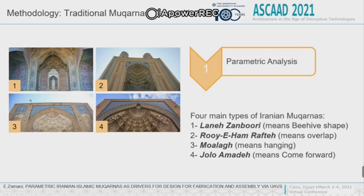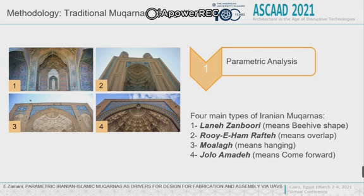Number three: Muallaq. Its shape is similar to stalactites and is formed by attaching various materials such as plaster tiles to the inside of a concave surface. This type of Mogharnas looks dangling and doesn't have high stability, although at first glance it is similar to Lani Zamburi. Number four: Jula Ahmada. Usually known as the simplest type, it is built by carving the stone and has moderate stability. It is very simple in terms of geometry and usually has no additional decoration. It has a very heavy weight and is made on the interior or exterior surface of the building.